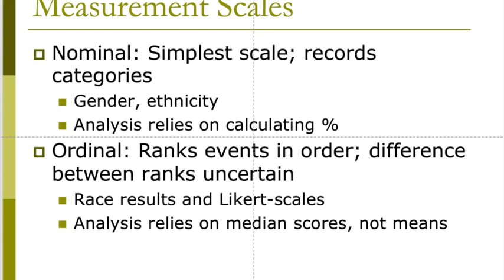Ordinal scales do not let you know the difference between a rank of one and a rank of two. So I don't know how much faster an Olympic athlete was who won a gold than a silver — I just know that one got the gold and one got the silver. Ordinal scales only allow you to use things like median scores, and measures of variability like range and interquartile range. They do not allow you to calculate means or standard deviations. You cannot use anything where you would calculate decimal values because we don't know how much greater or less than a rank of one is than a two.